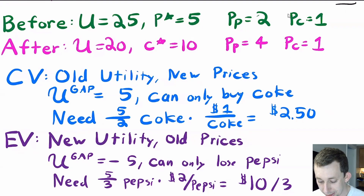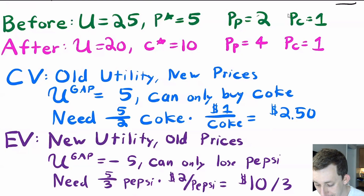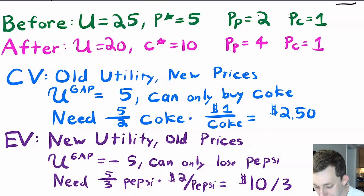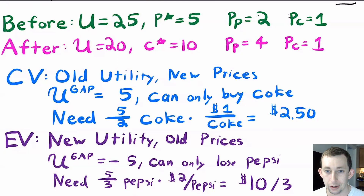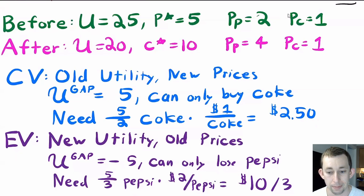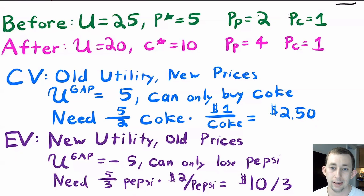For equivalent variation, we're trying to get to the new utility of 20 at the old prices — asking how much Bill would be willing to pay to avoid the price increase. The gap is again 5, but at the old prices we're only buying Pepsi. We need 5/3 Pepsi at the old price of $2, giving an equivalent variation of 10/3, or roughly $3.33. Note that compensating and equivalent variation are not always equal — they measure slightly different things.